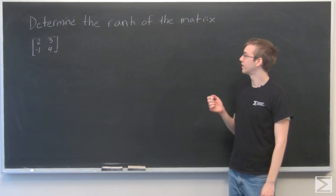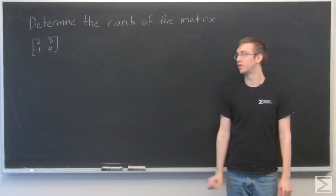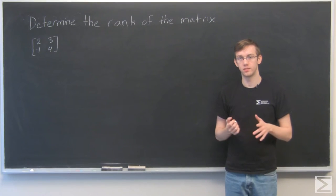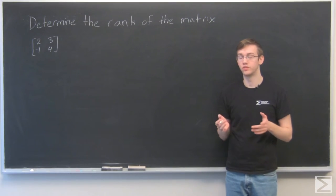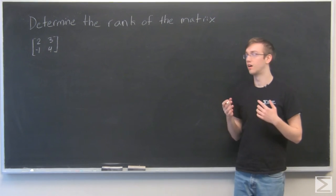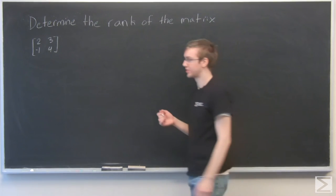For this problem, we need to determine the rank of the matrix. So the rank is the number of non-zero rows when the matrix is in reduced row echelon form. So let's put this matrix in reduced row echelon form.